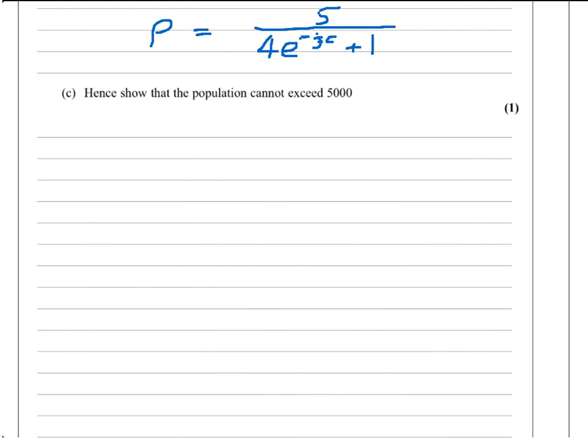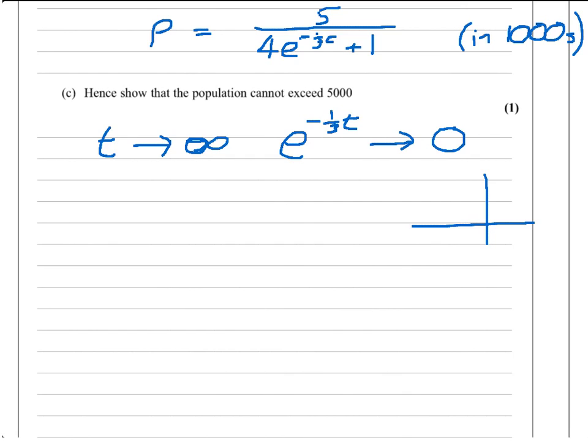And finally, for one mark, we've been asked to show that the population cannot exceed 5,000. Remember, P was in thousands, that's really important, but more importantly is actually the interpretation of what we've got here. I mean, effectively what happens as time passes, as t goes on and on to infinity, then you should know that e to the minus of t, e to the minus, heads towards 0, but would always be slightly bigger than 0. Effectively, e to the minus graph looks like this, getting closer and closer to 0, but never quite getting to 0.